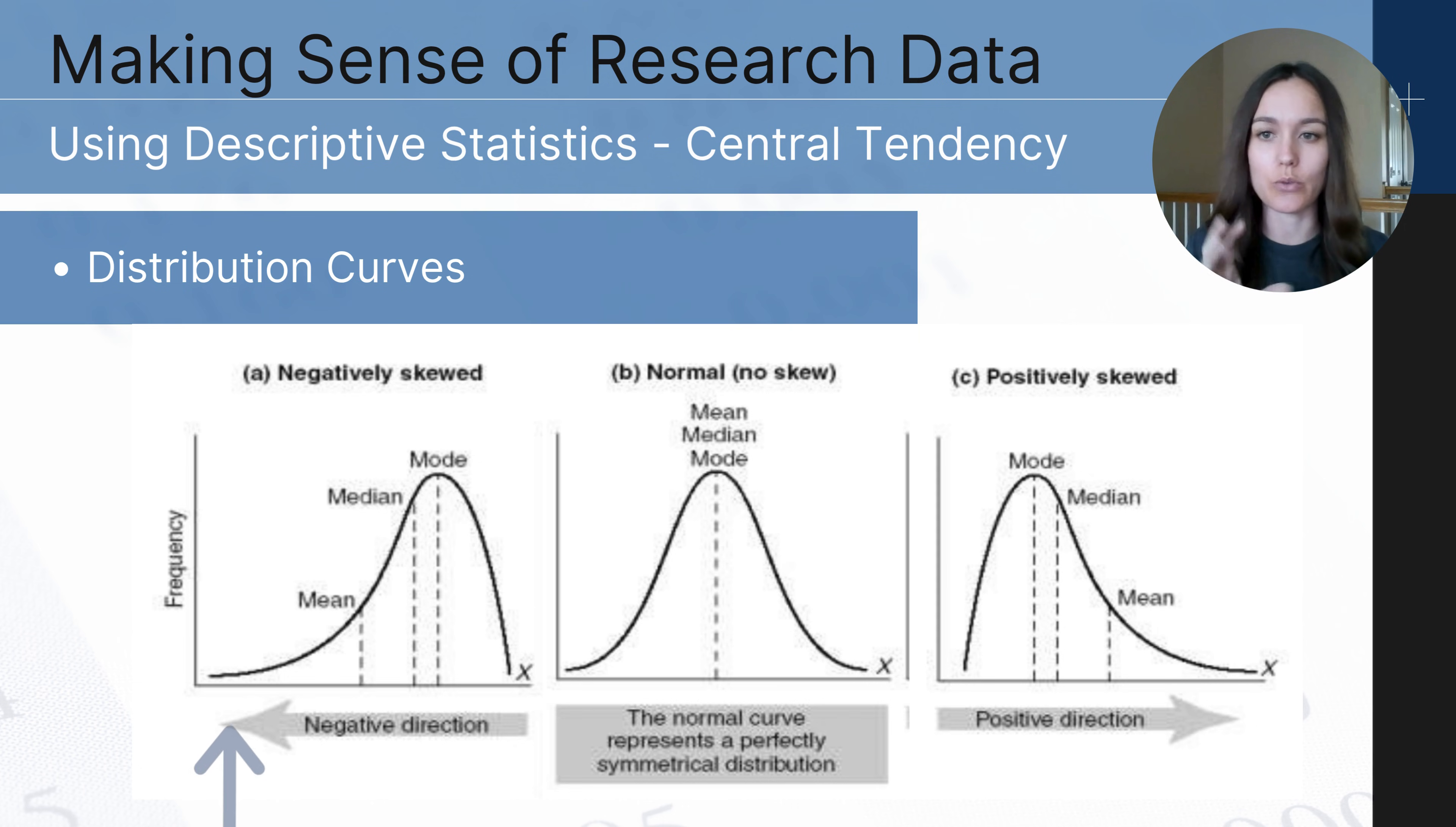That have pulled that mean lower than the majority of the scorers. And so the majority of the scorers have higher scores than the mean.